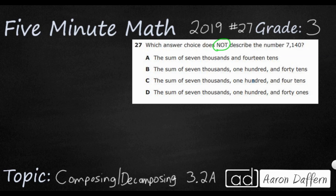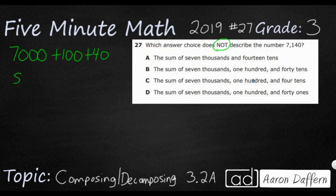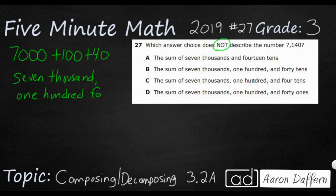All four answer choices are written in words. To help us, let's take a look at 7,140 in expanded form: 7,000 plus 100 plus 40. We notice that every single one of the answer choices has 7,000, so that's not going to be our trick.